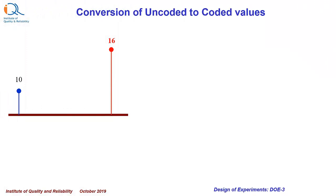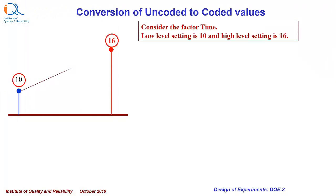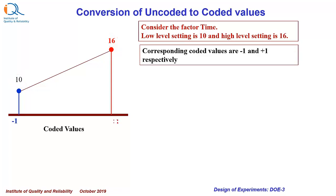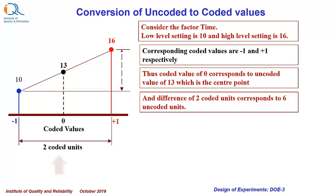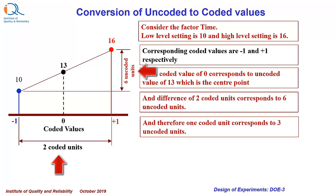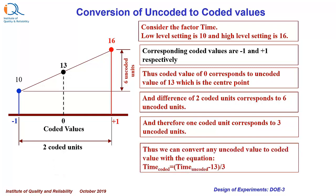Consider the factor time and conversion of uncoded to coded values. The low level setting is 10 and high level setting is 16. Corresponding coded values are minus 1 and plus 1 respectively. The coded value of 0 therefore corresponds to uncoded value of 13, which is the center point. The difference of 2 coded units corresponds to 6 uncoded units, and therefore 1 coded unit corresponds to 3 uncoded units. Thus, we can convert any uncoded value to coded value with the equation: time coded equals time uncoded minus 13, divided by 3.